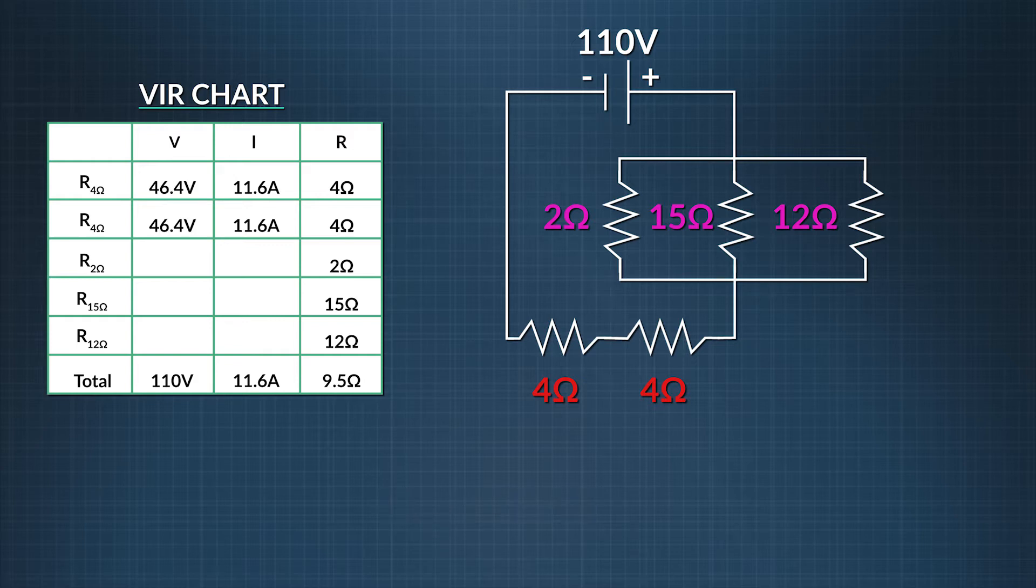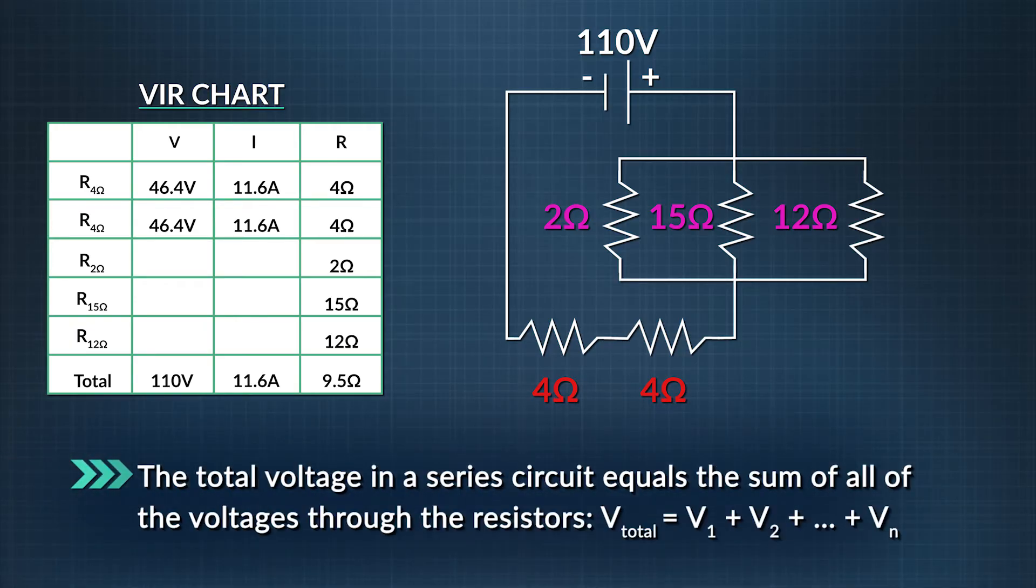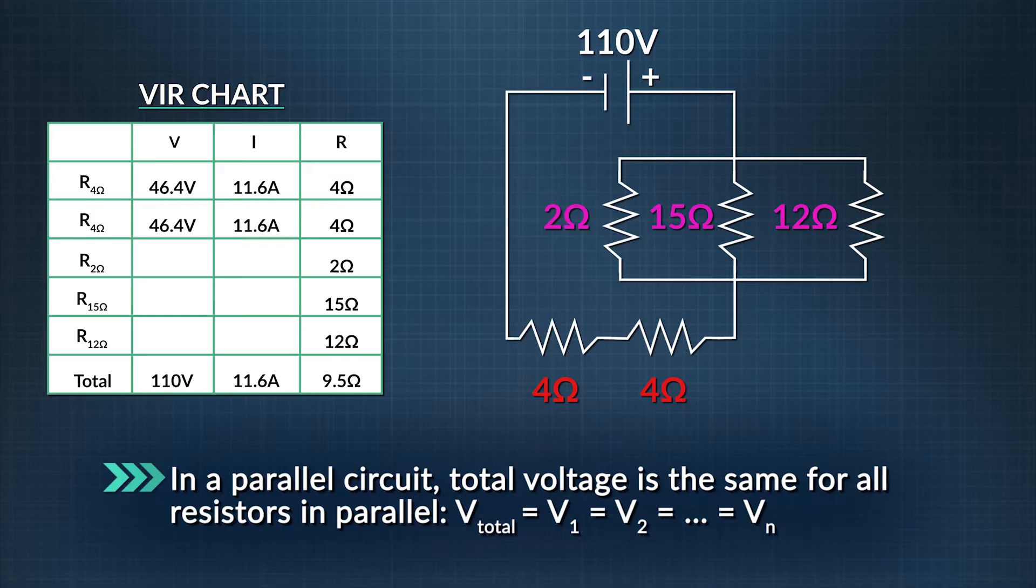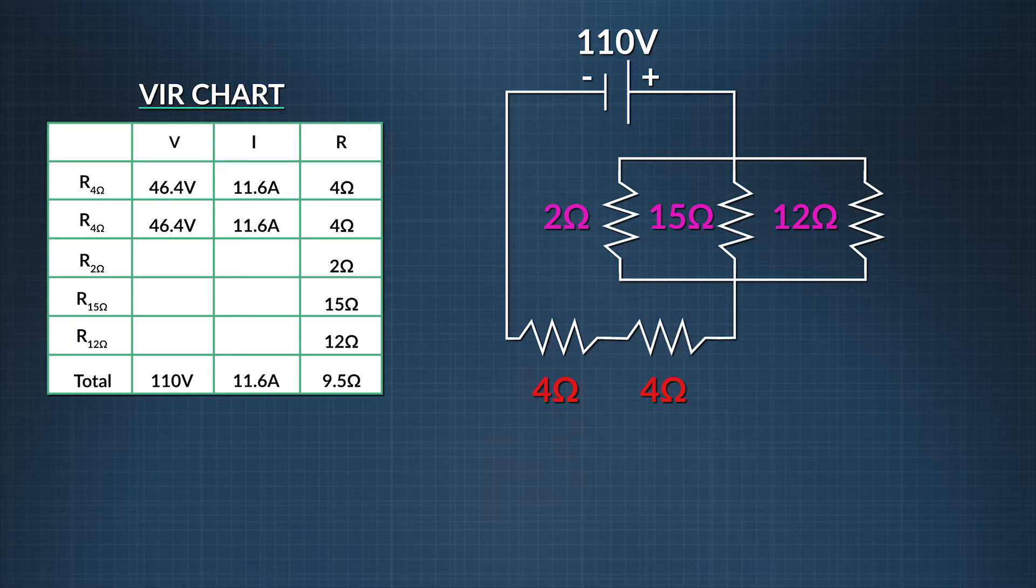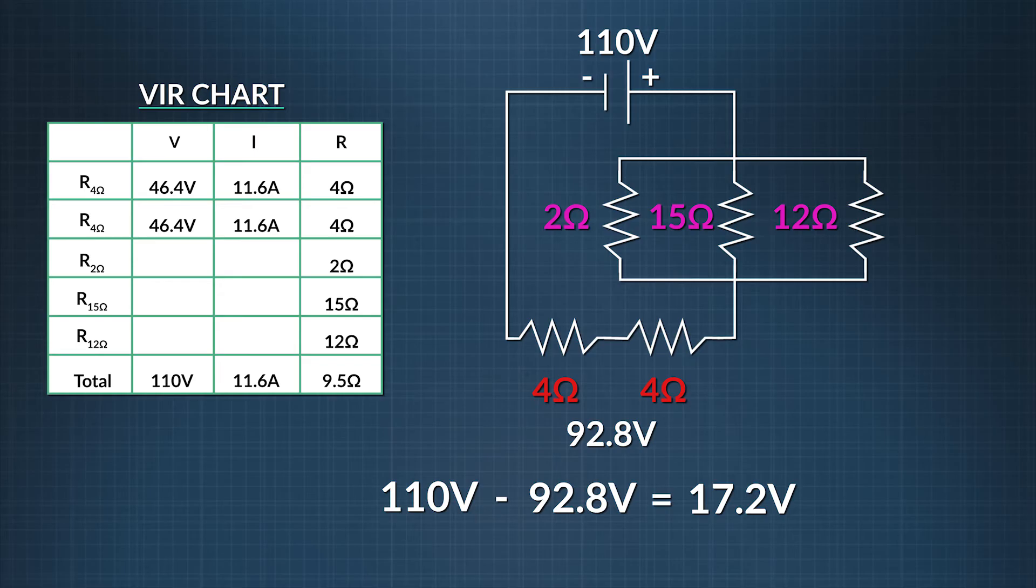Now, let's look at the relationship between the voltage in series and parallel circuits, which is similar to that of current, but it's flipped. The total voltage in a series circuit equals the sum of all of the voltages through the resistors. In a parallel circuit, total voltage is the same for all resistors in parallel. Since each 4 ohm resistor has a voltage across them of 46.4 volts, this gives us a total voltage drop across those resistors in series of 92.8 volts. That means the total voltage drop over the entire parallel circuit branch is 110 volts, the total voltage of the circuit, minus 92.8 volts, the voltage drop across the two resistors in series, which gives us 17.2 volts.